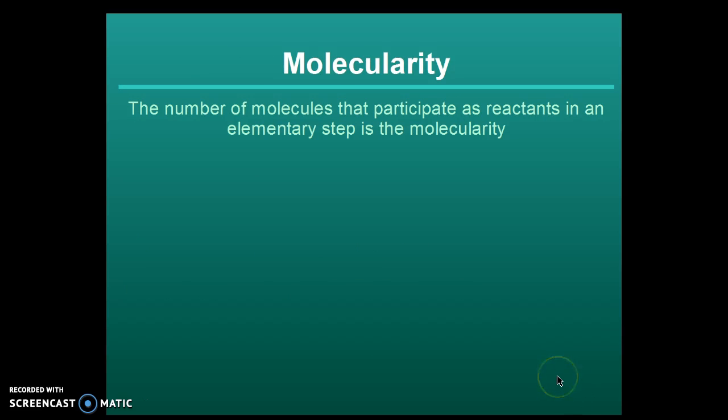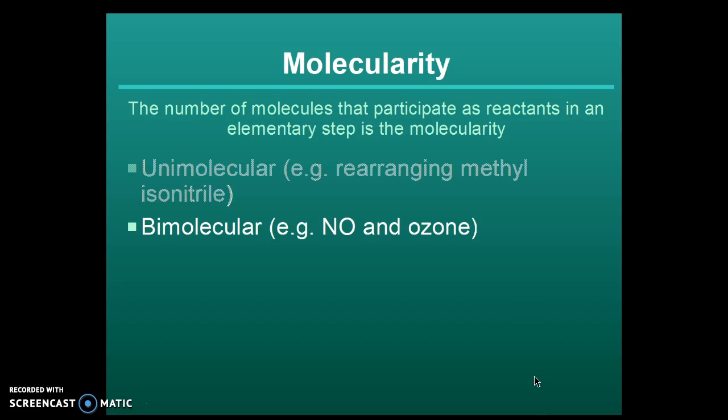Molecularity is given by the number of molecules that participate in each elementary step. There is unimolecular, and we find methyl isonitrile does not require a collision. There is bimolecular, for instance the collision of nitrogen monoxide and ozone. And there's termolecular, and there's no simple examples of that. They occasionally occur in biochemistry.